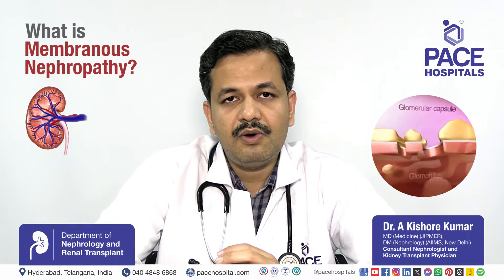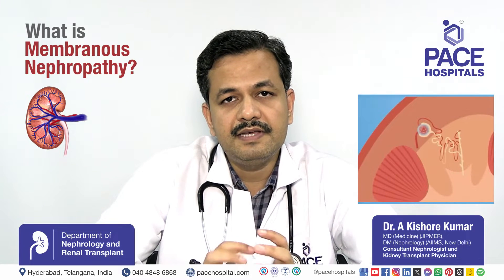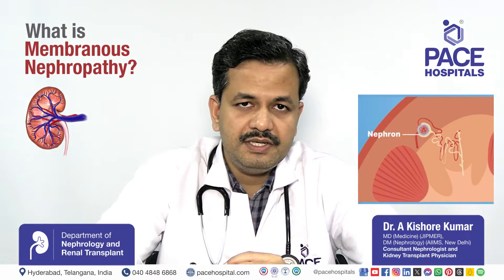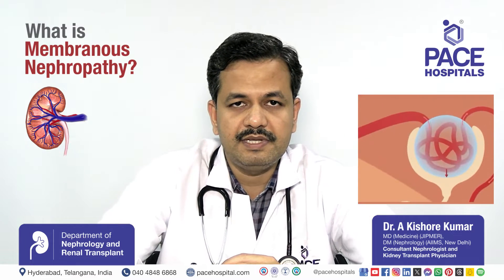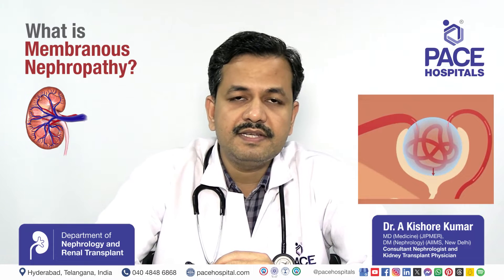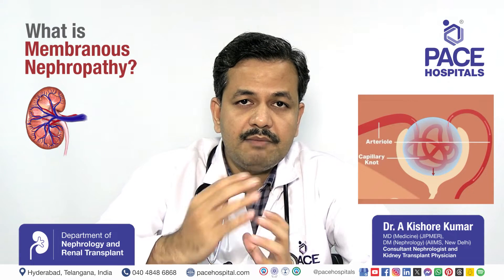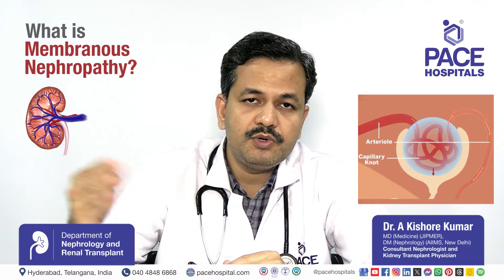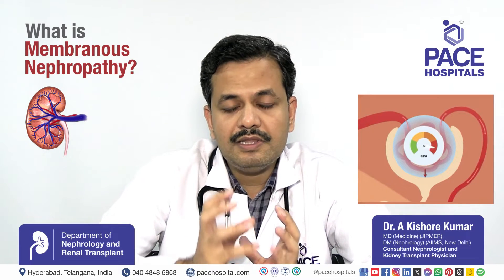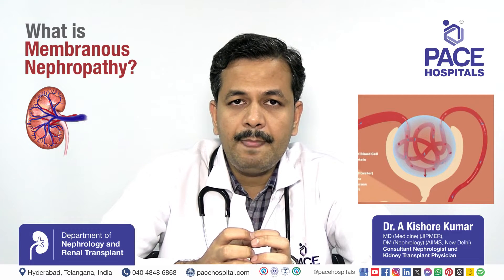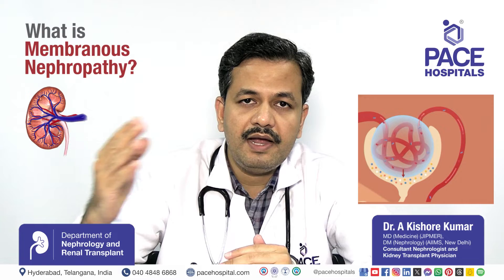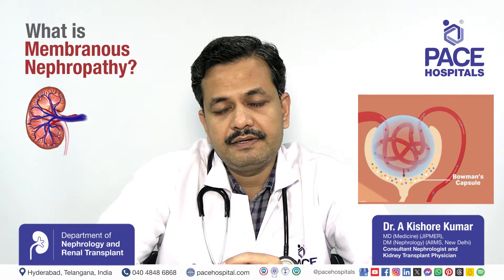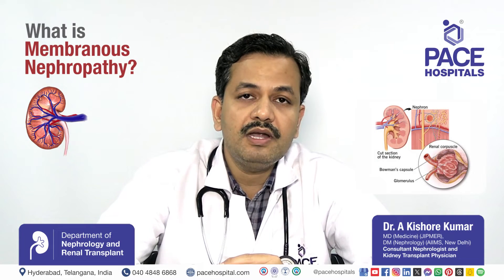This filtering is done by something called nephrons in our kidney. Each kidney has 10 lakh units called nephrons, and there is a part of a nephron called the glomerulus — a small globular structure where the main process of filtering takes place. Inside this glomerulus, there is a barrier, like a tea filter. This barrier filters the blood to produce urine. The blood comes to this barrier, excess waste products and water get filtered, and the remaining blood is returned to the body. This barrier is called the glomerular filtration barrier, and one part of it is the glomerular filtration membrane.